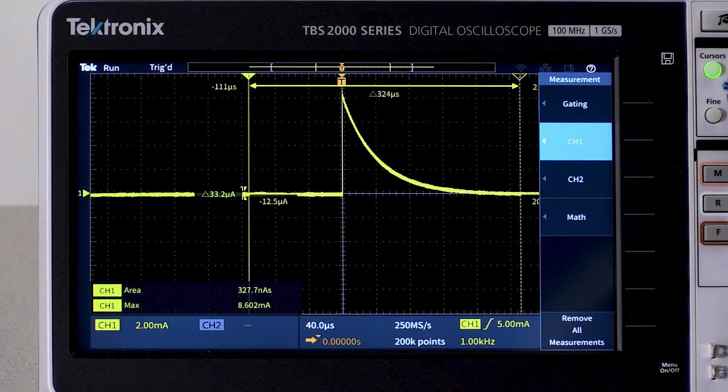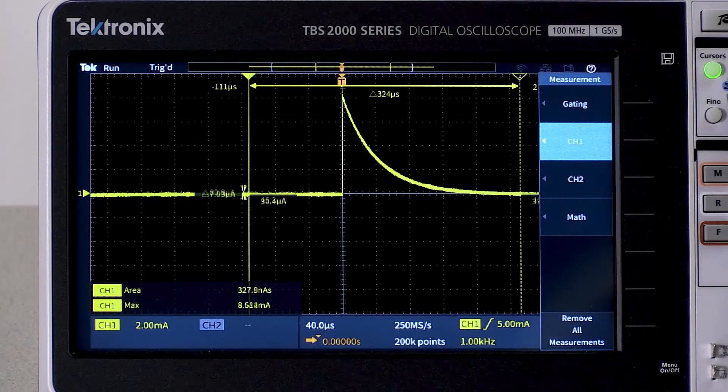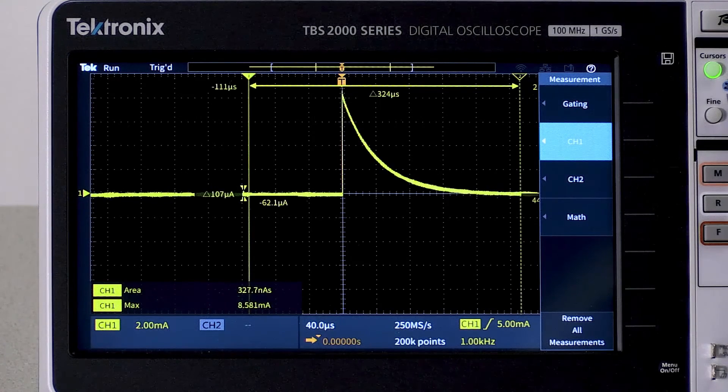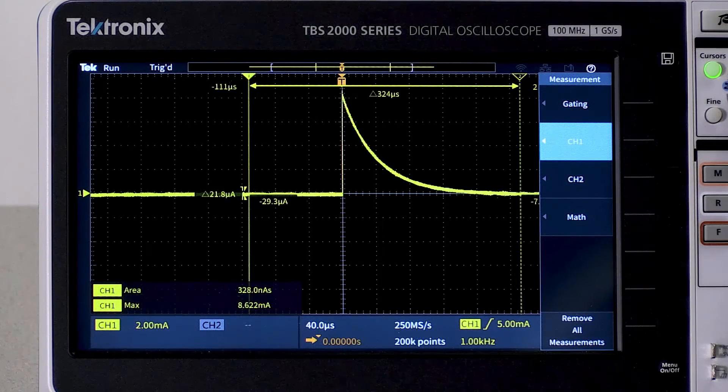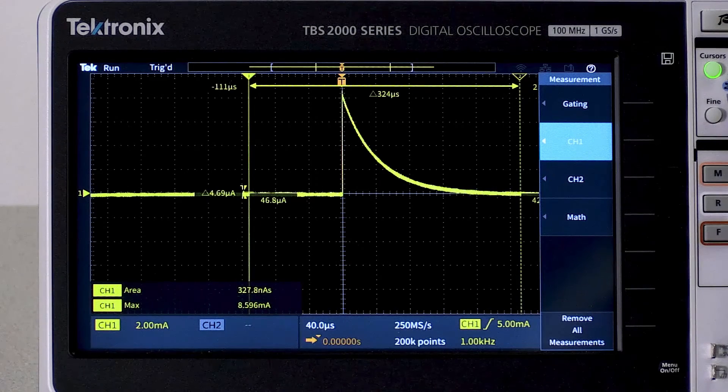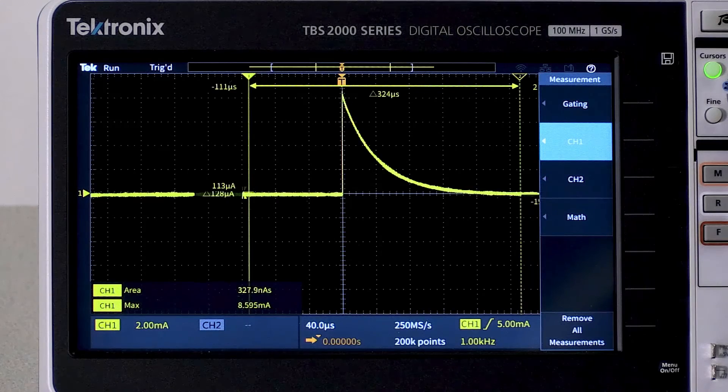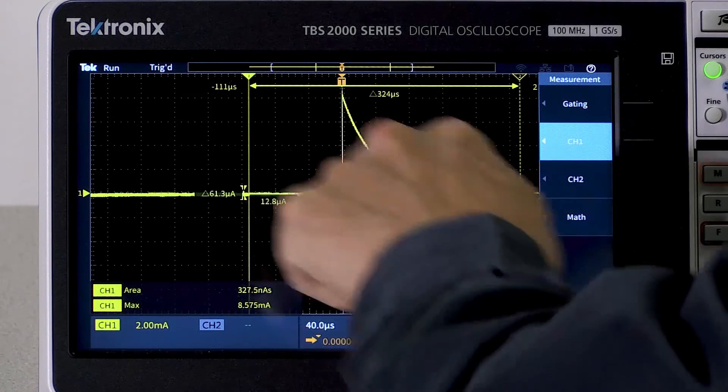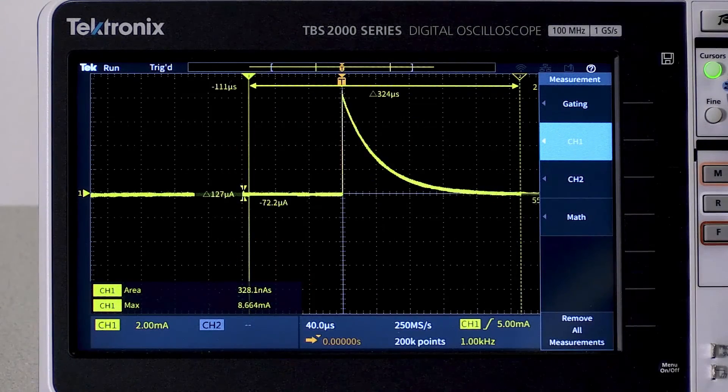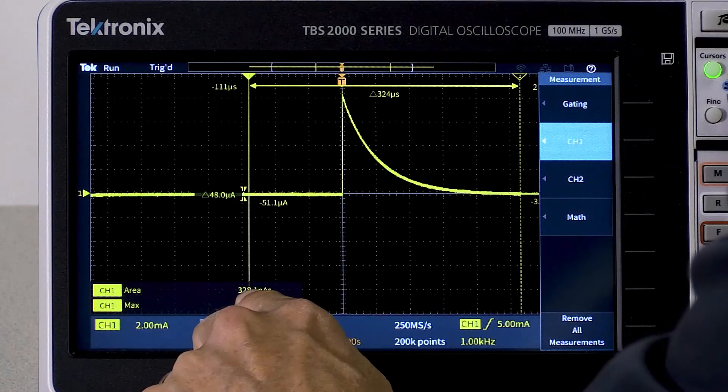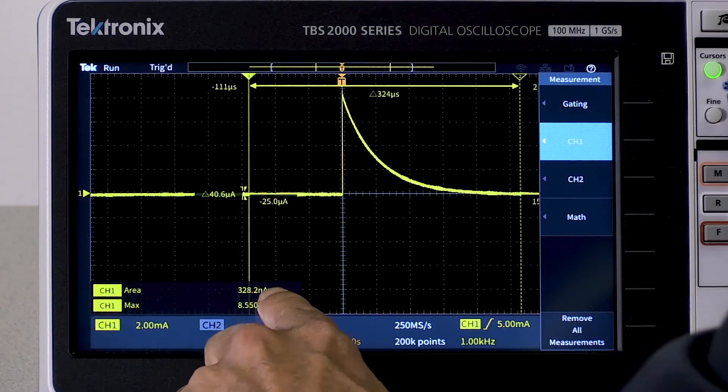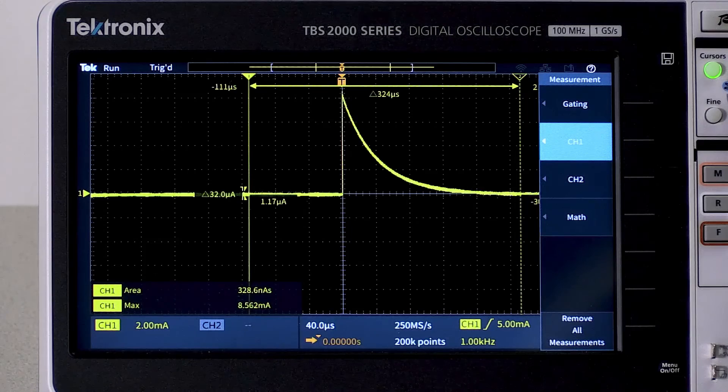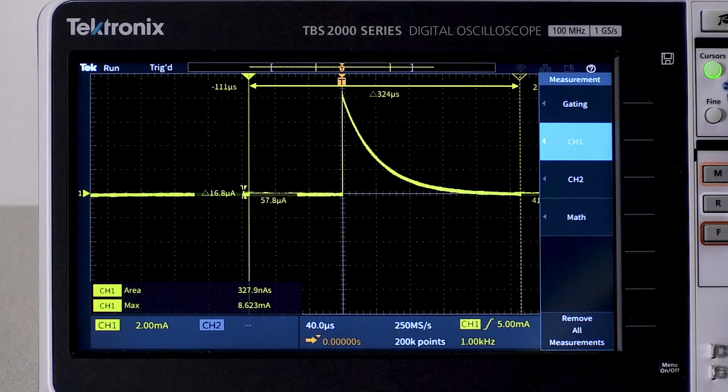As you might remember from physics class, the charge stored on a capacitor is simply capacitance times voltage. So we would expect the charge to be about 0.33 microfarads times one volt, which equals 330 nanocoulombs. The area measurement integrates the area underneath the curve, and it shows about 330 nanoamp seconds, which is equivalent to about 330 nanocoulombs. So thankfully, the laws of physics have been proven once again.